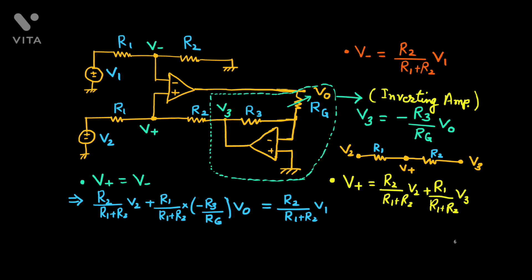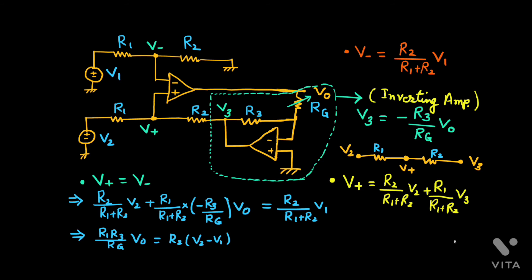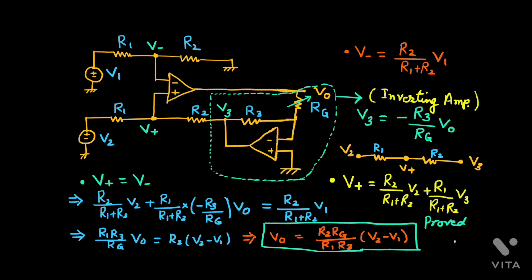From this equation, R1 plus R2 appears in the denominator of every term and can be cancelled. Simplifying, we get R1 times R3 over RG times V0 equals R2 times V2 minus R2 times V1, which gives R2 times (V2 minus V1). So the output voltage V0 is proportional to the difference of input voltages V2 minus V1, and since RG is in the expression, we can linearly vary RG to get different differential gains.